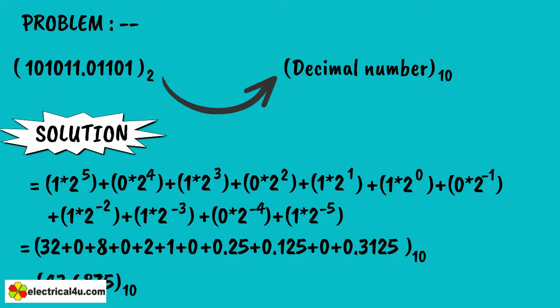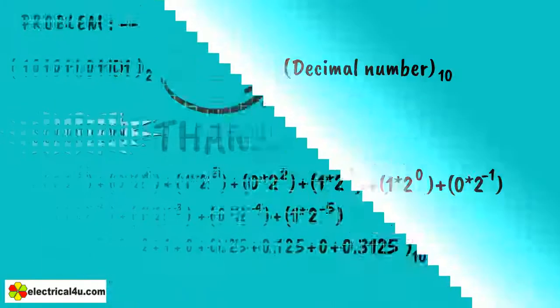In this way, we have to convert a binary number to a decimal number. I hope you have understood this. Thank you.